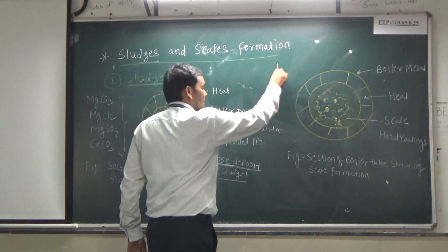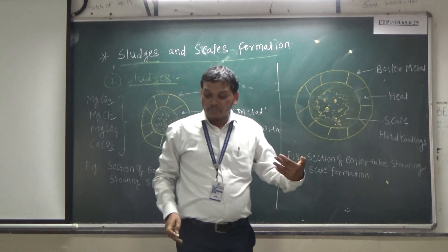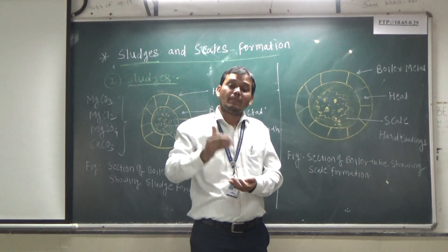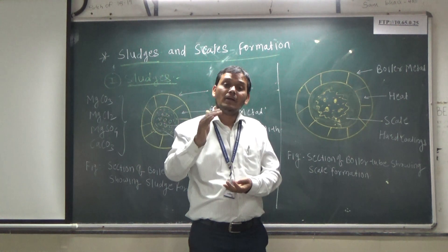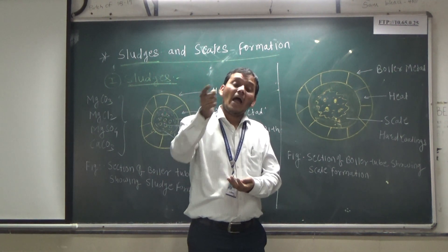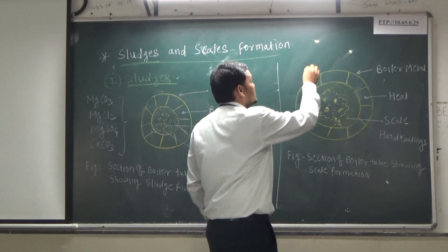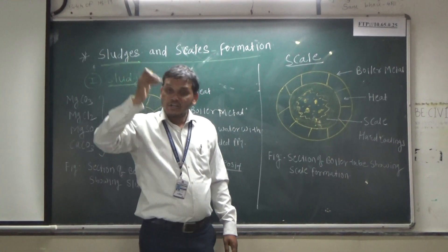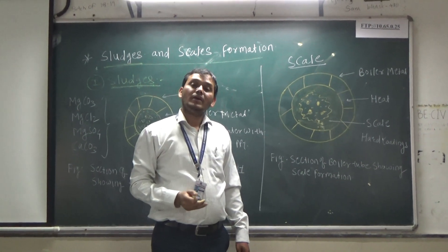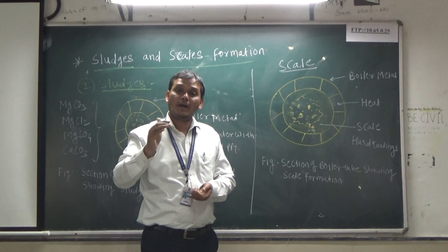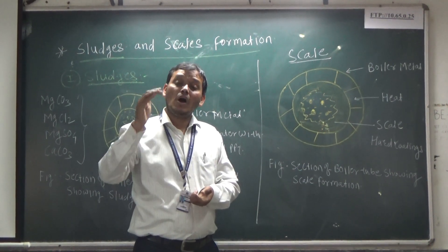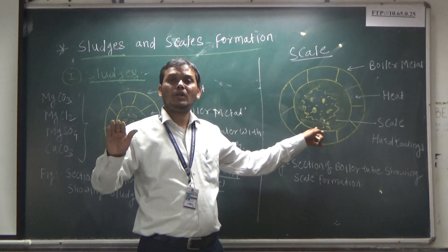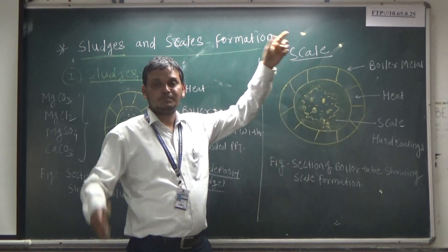Now the next topic is scale — exactly opposite to sludge. Scale means: the dissolved salt in boiler water, due to steam generation, is converted into a hard, tough, thick layer or adherent coating at the inner surface of the boiler which is very difficult to remove. This is called scale formation.